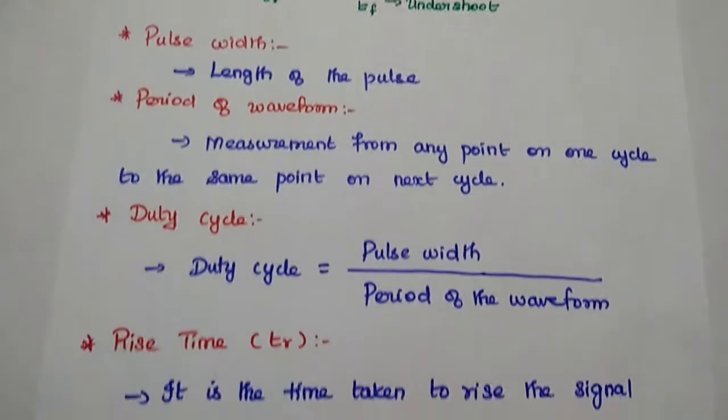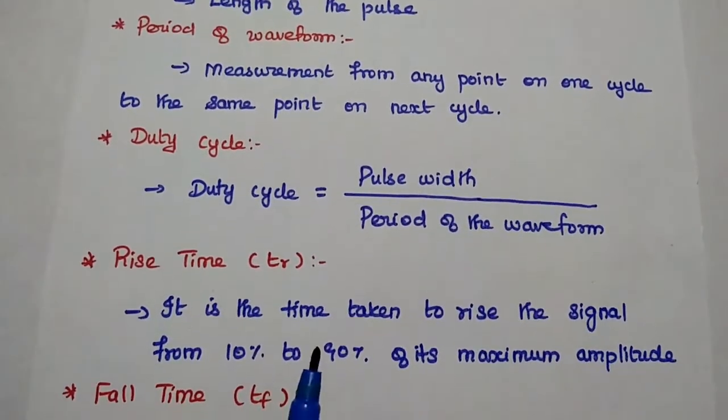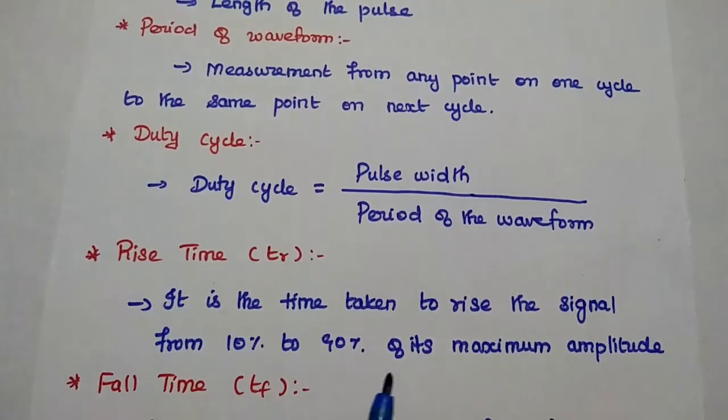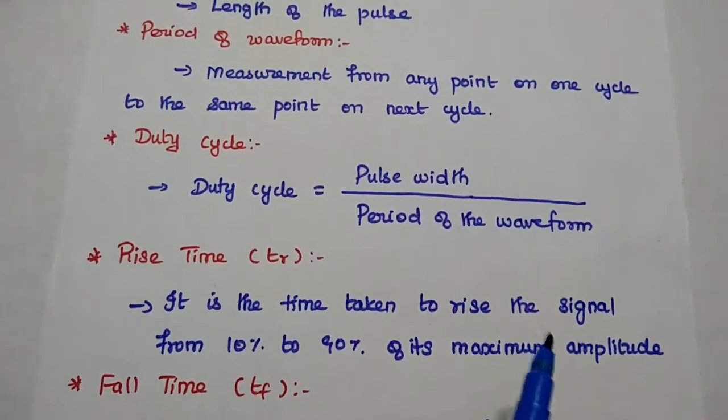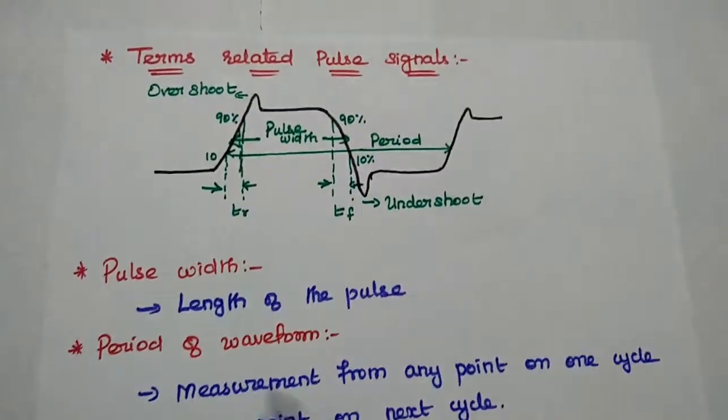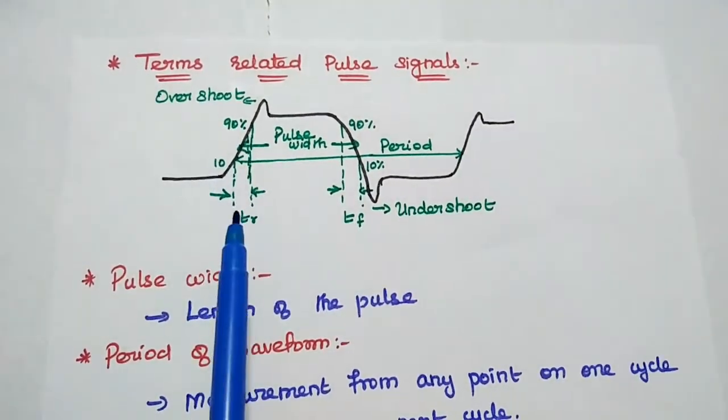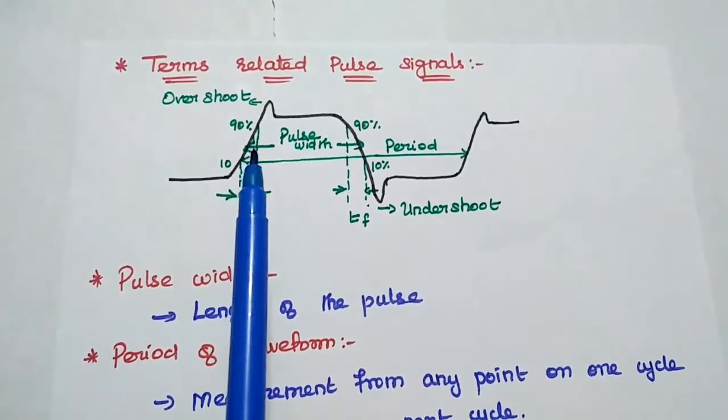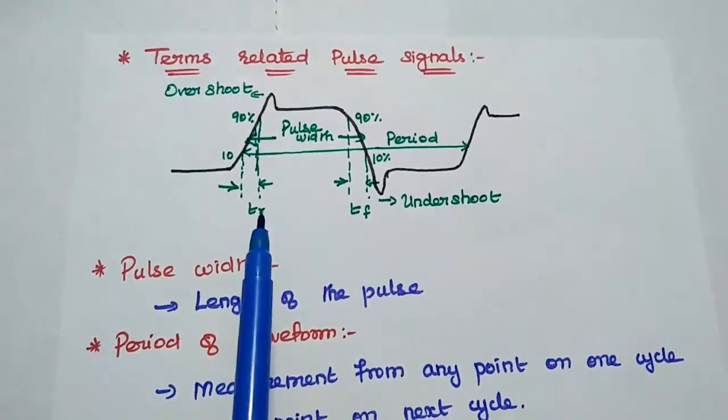Then the rise time. It is the time taken to raise the signal from 10 percent to 90 percent of its maximum amplitude. In this diagram we can see this. The time taken by the signal to rise from 10 percent to 90 percent is known as rise time.